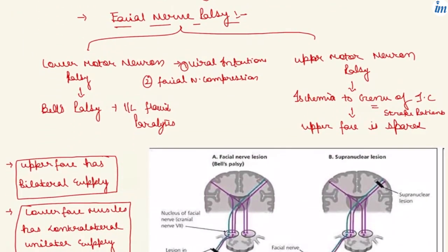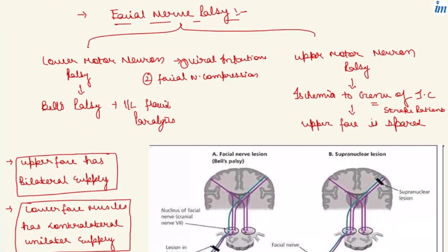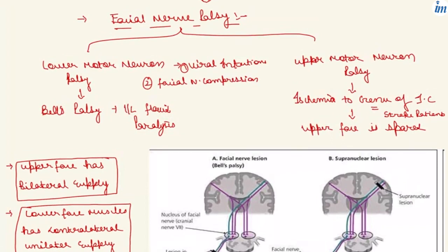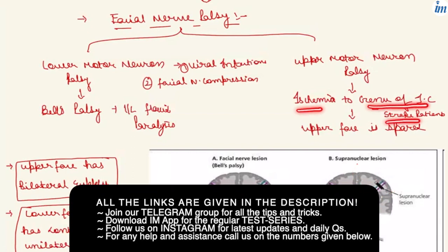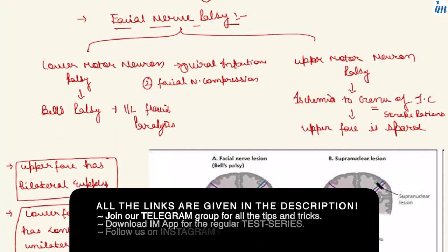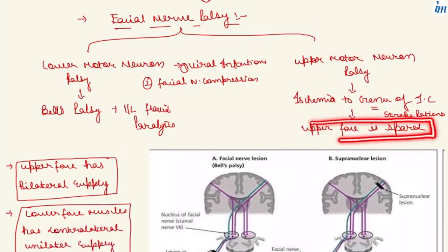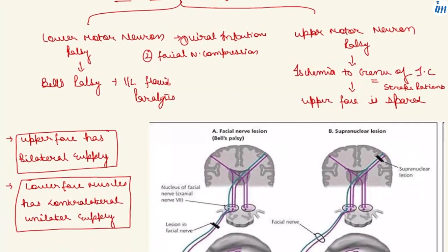Whenever there is a viral infection — especially herpes virus infection — or compression of the facial nerve, we see lower motor neuron palsy of the facial nerve, which we call Bell's palsy. The features are ipsilateral flaccid paralysis. Whenever there is ischemia to the genu of the internal capsule, we see upper motor neuron palsy of the face, and here the upper face is spared.